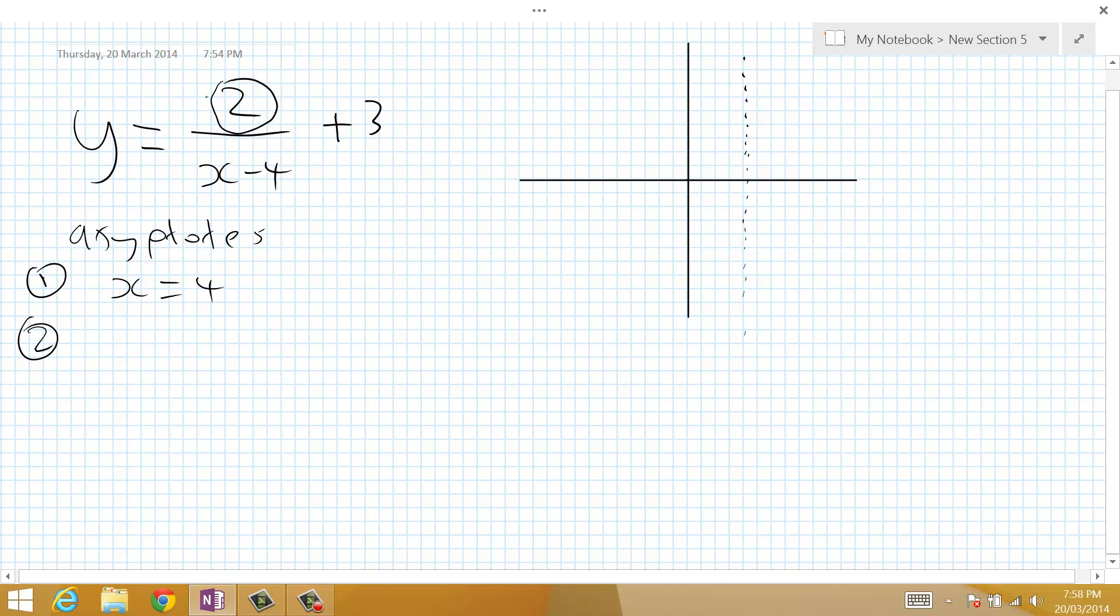So therefore y can never equal 0 plus 3. So that means y can never equal 3, so our second asymptote has to be y equals 3, which runs approximately along there.